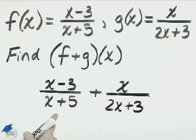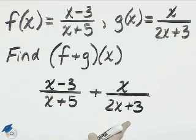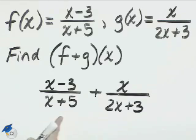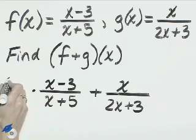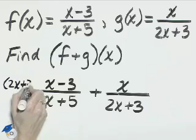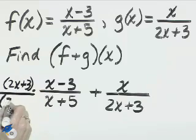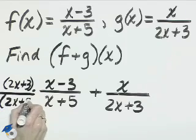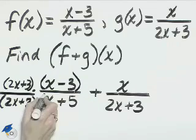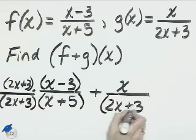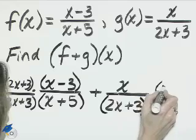The least common denominator will be x plus 5 times 2x plus 3. This first fraction needs to multiply by 2x plus 3 in the numerator and denominator. The second fraction needs to multiply by x plus 5, again in the numerator and denominator.